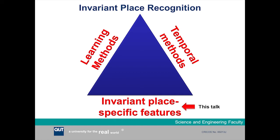The first approach involves learning methods, where you use carefully curated training data to learn how the appearance of an environment changes over time. The second involves using temporal or sequence-based information, such as my other algorithm SeqSLAM. And the third involves trying to come up with invariant place-specific features or representations, and that's what we're trying to do in this work.